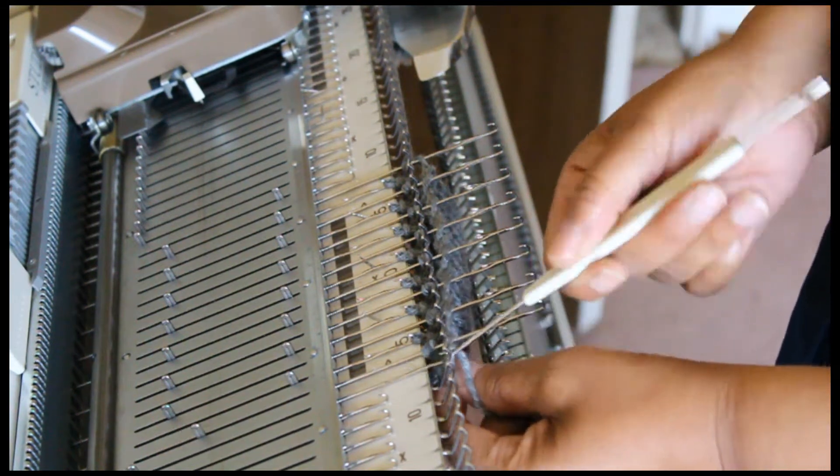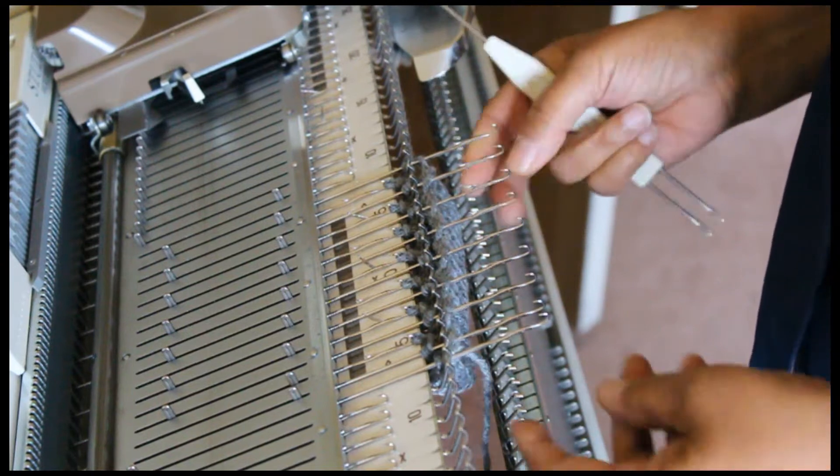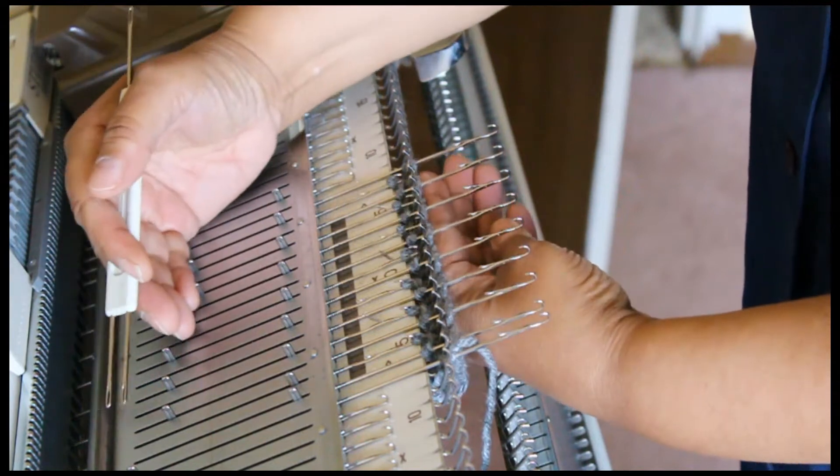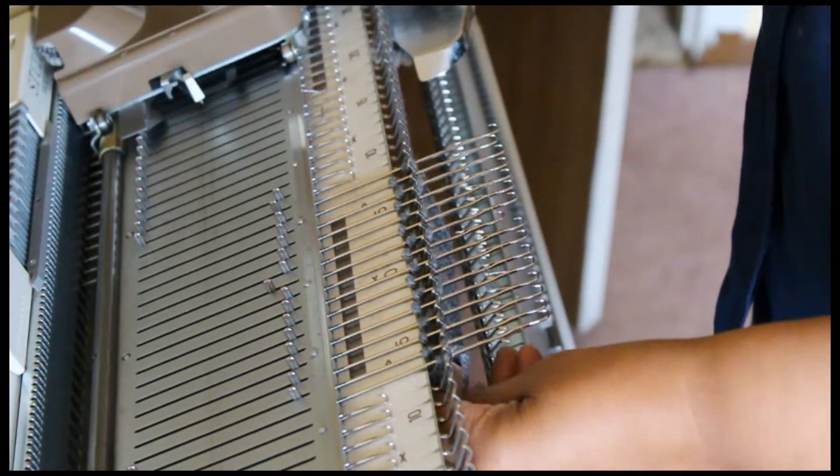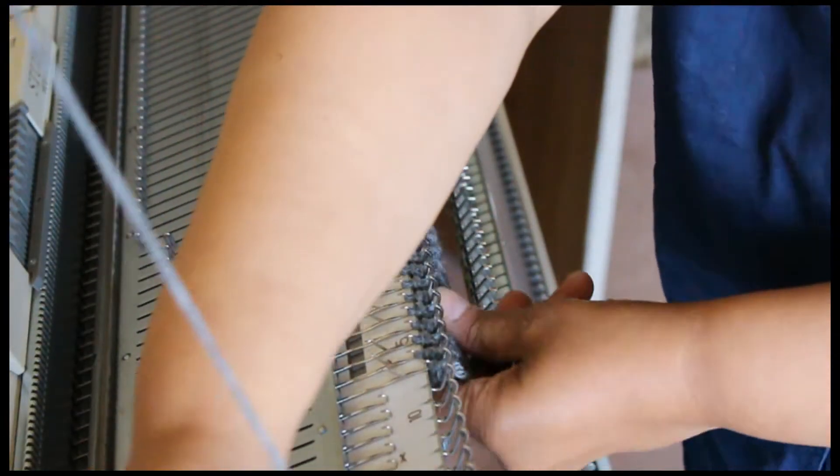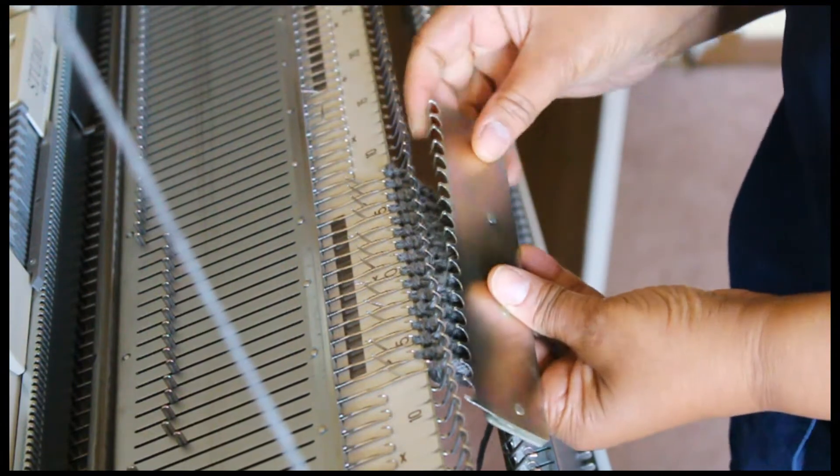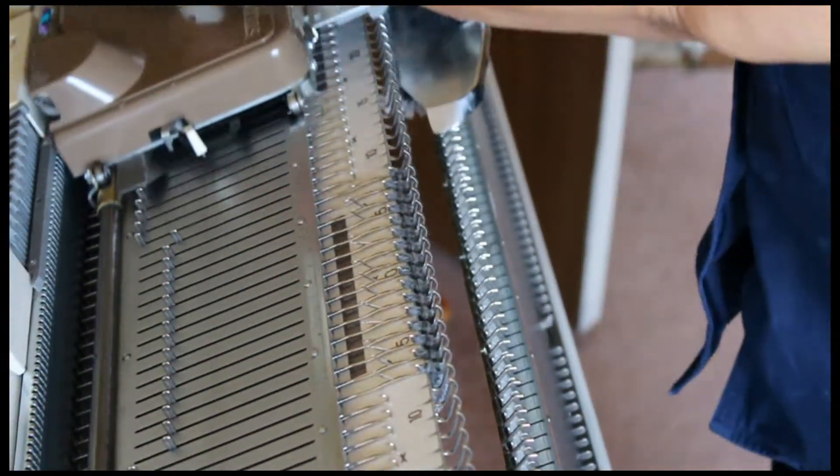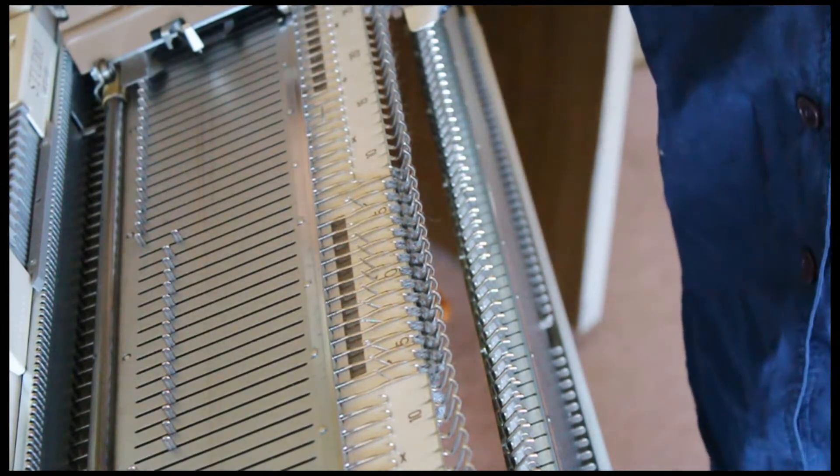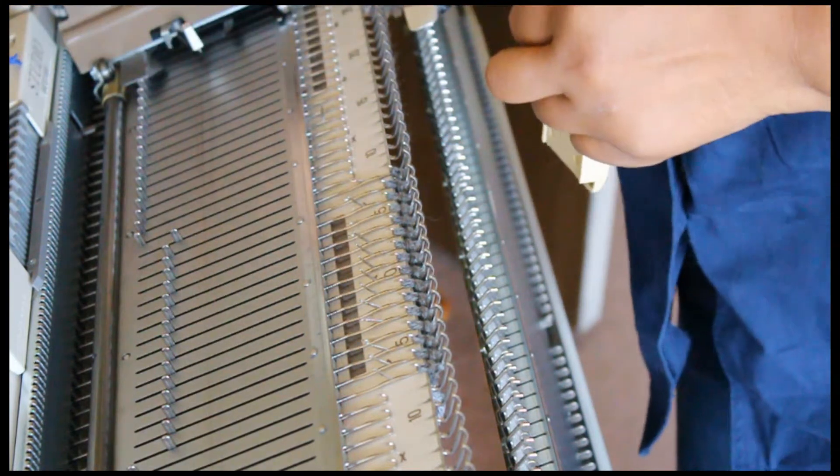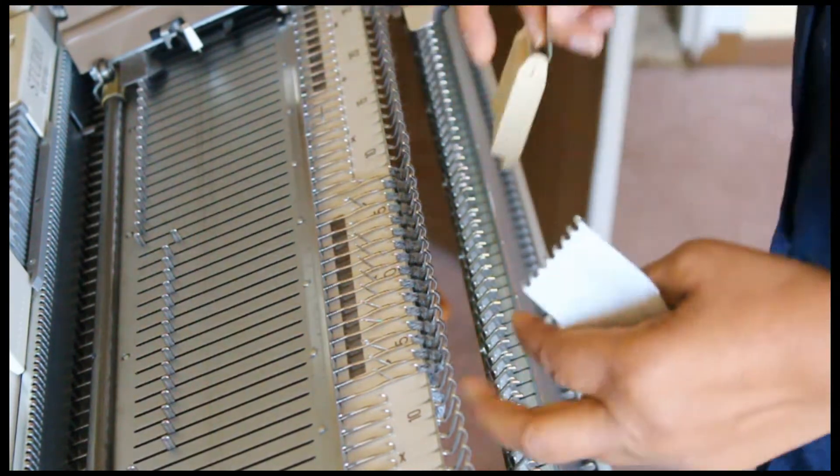Okay, the pattern requires you to cast on 16 needles, knit 16 rows and pick up the bottom stitches and place them on the needle. Push all the needles out to hold position and knit four rows before starting to heel.